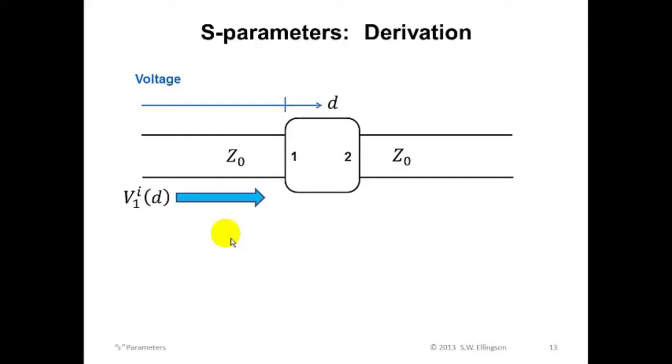In particular, we could somehow cause a wave to travel from left to right towards port one. And let's call that voltage V super I sub one as a function of d, where d indicates the distance along the transmission line measured from the port to which it's connected.